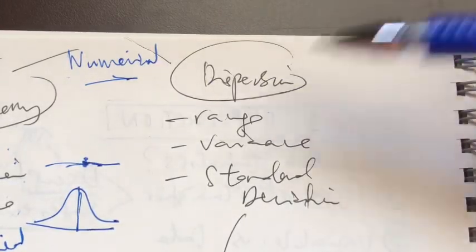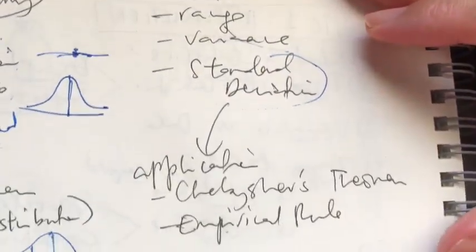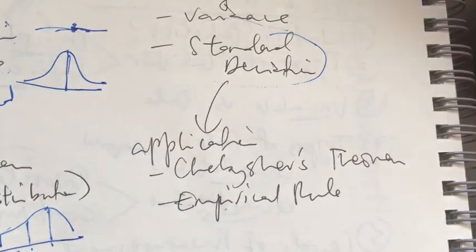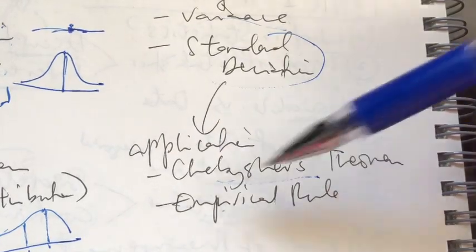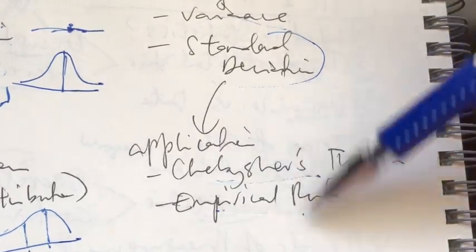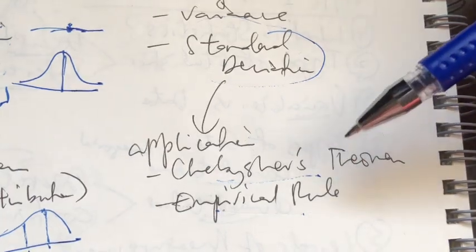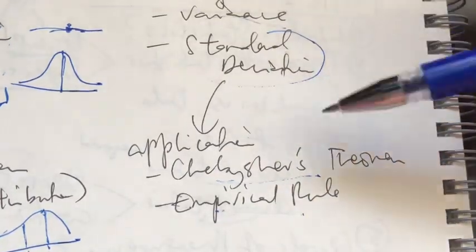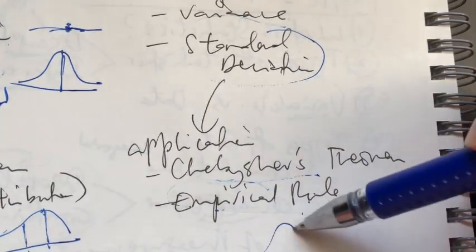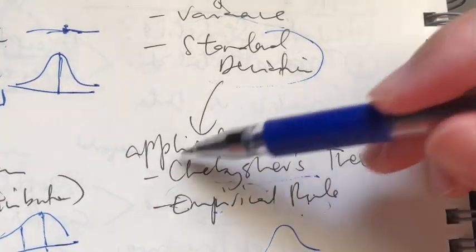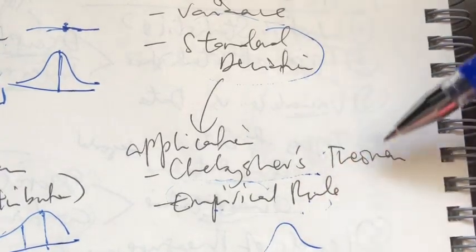As for dispersion, specifically standard deviation, we can have several applications. We've learned two applications of standard deviation: Chebyshev's theorem and the empirical rule. Both tell us the dispersion or spread of our data set. The empirical rule can only be used for a symmetrical distribution, whereas Chebyshev's theorem can be used for any distribution, including skewed distributions.